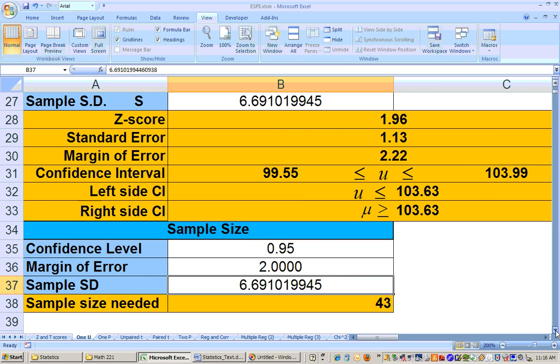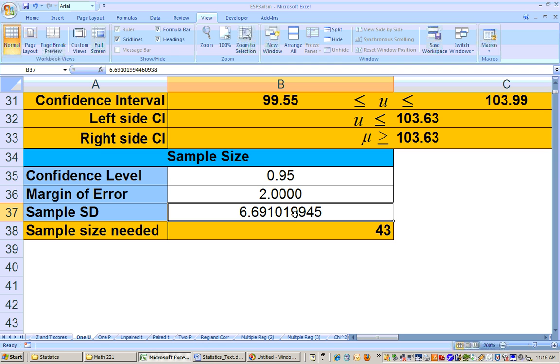But sometimes you may not be given your sample standard deviation. It will say a certain confidence level, and it will tell you you get the margin of error down to a certain bit, but it won't give you the sample standard deviation.